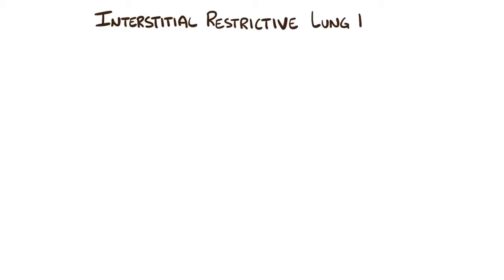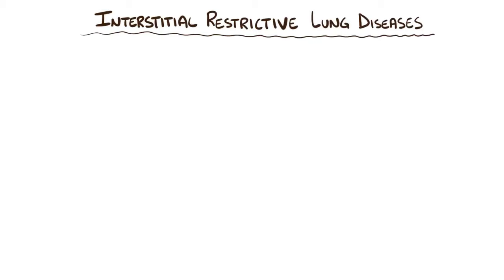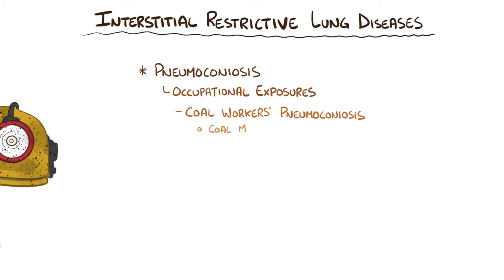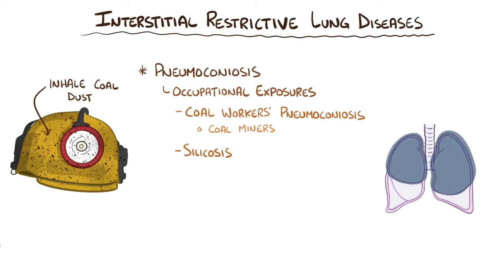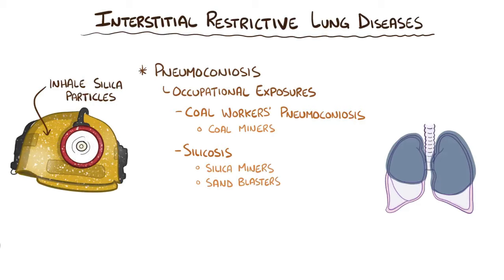In interstitial restrictive lung diseases, the lung tissue gets damaged in various ways. The first large category is called pneumoconiosis, a broad category that includes diseases resulting from occupational exposures. Coal workers' pneumoconiosis happens in coal miners who inhale tiny particles of coal or carbon dust, which mainly settle in small airways in the upper lobes of the lung. Silicosis is another type of pneumoconiosis, occurring in silica miners and sandblasters who inhale silica particles which also settle in the upper lobes of the lung. This can cause fibrotic nodule formation in addition to macrophage dysfunction, causing an increased risk of tuberculosis infections.